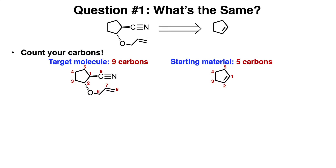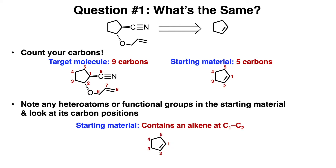The first question you'll ask yourself in any retrosynthesis problem is: what's the same? To do this, you'll first count your carbons in both the target molecule and in your starting material. In this particular problem, the target molecule has 9 carbons, while the starting material has 5 carbons. Then you'll note any heteroatoms or functional groups in the starting material, making sure to look at carbon positions too. This starting material contains an alkene at the C1-C2 bond position.